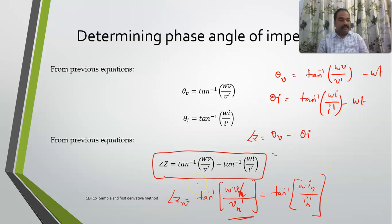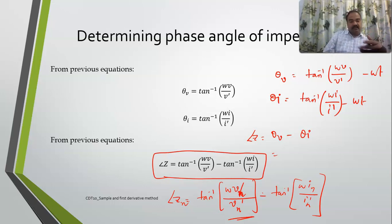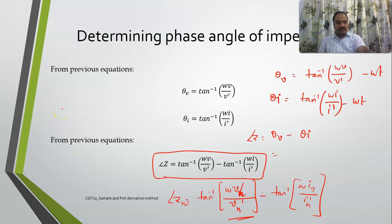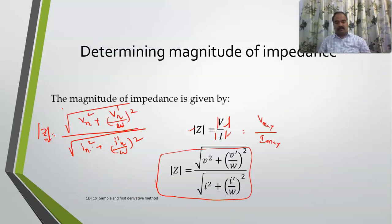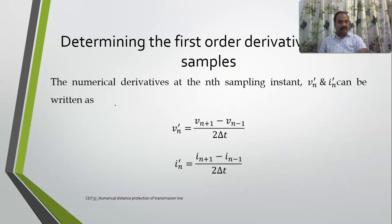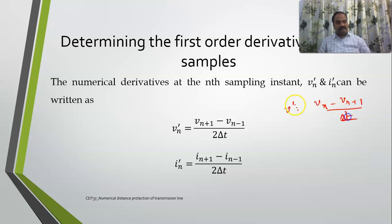Every moment you need to calculate the magnitude and also the phase angle, and compare them with your preset setting value. In the magnitude equation you need the nth sample and the derivative of the nth sample. In the earlier case we derived v' = (vn − vn+1) / Δt, but here in the Mann and Morrison method I will be using a different approach.